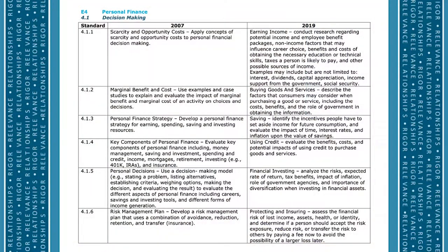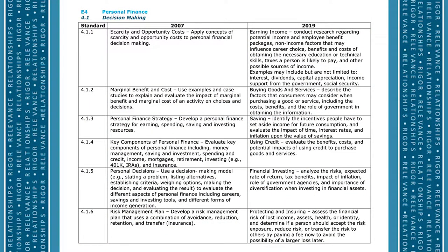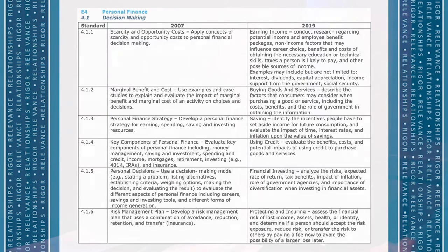4.1.4 is on using credit and credit scores. You need to know the rules of the game if you want to be successful. We want students to understand what makes up their FICO score, what's most important, and how choices like signing up for a new credit card might impact them negatively or positively. Then 4.1.5 on financial investing — this is the exciting part. If you save over a long period of time, how is that money going to grow? Watching compound interest and the returns really hooks a lot of kids when they see they could become a millionaire just by doing this — it takes time, but once they know, they can take the steps to be successful.